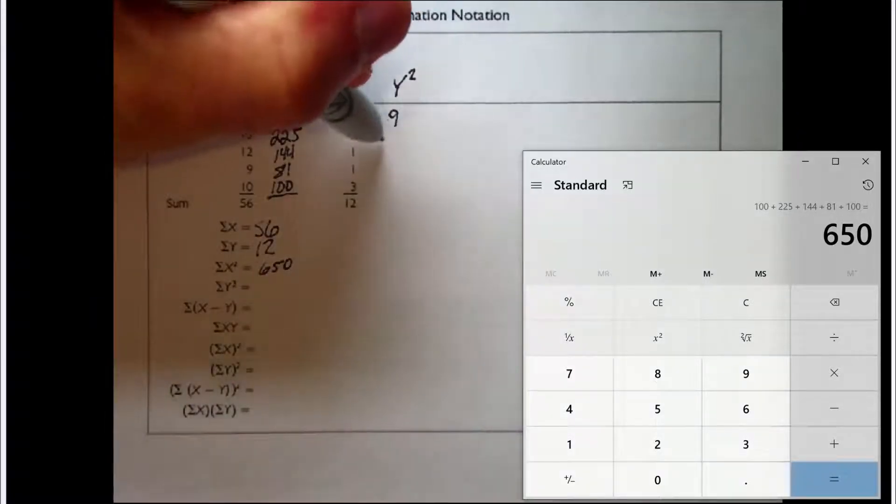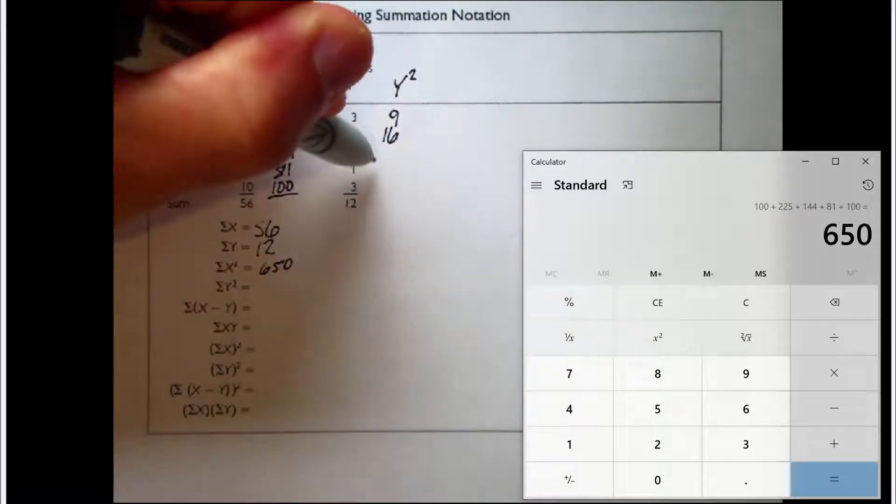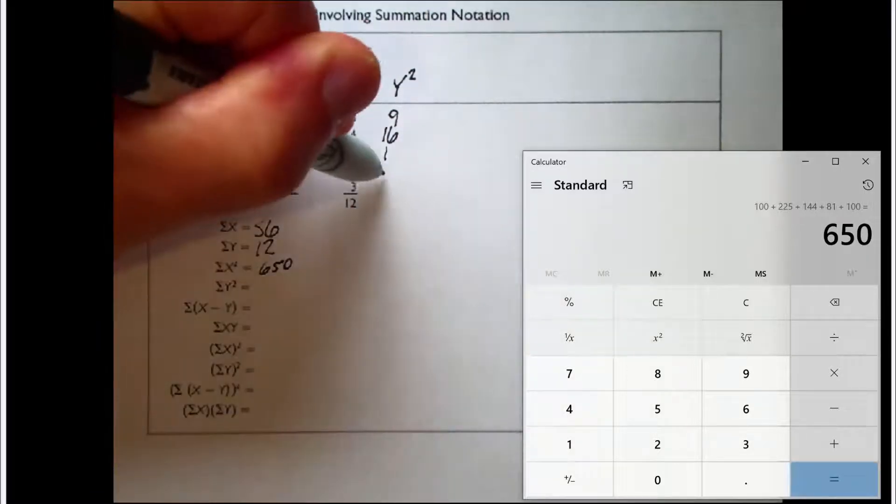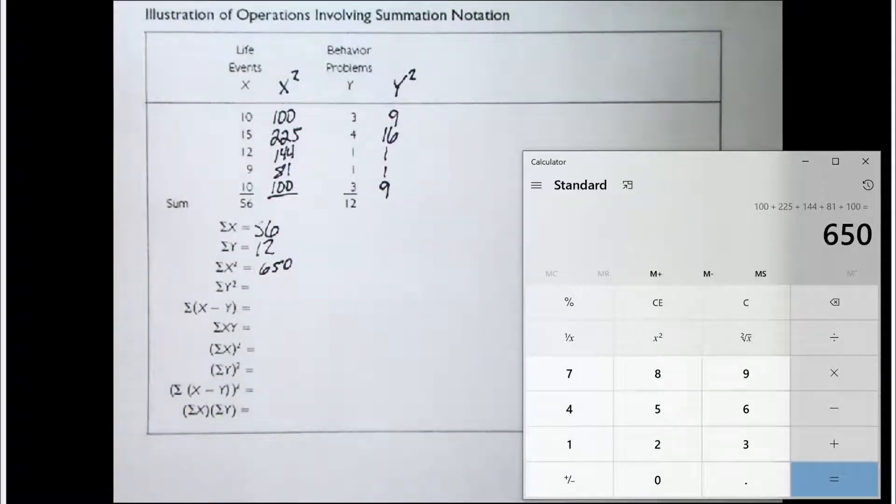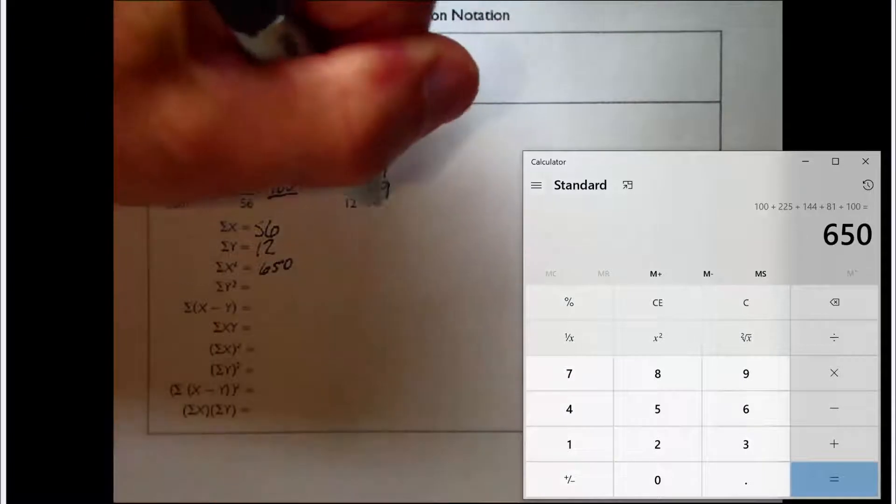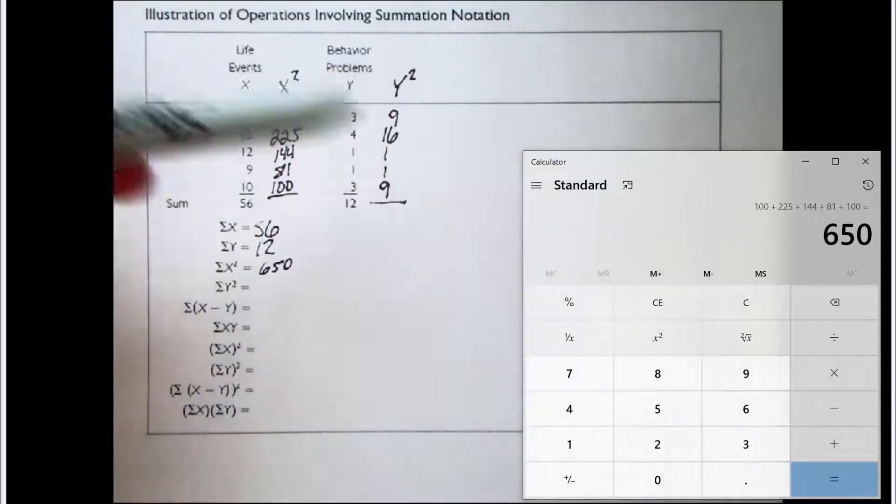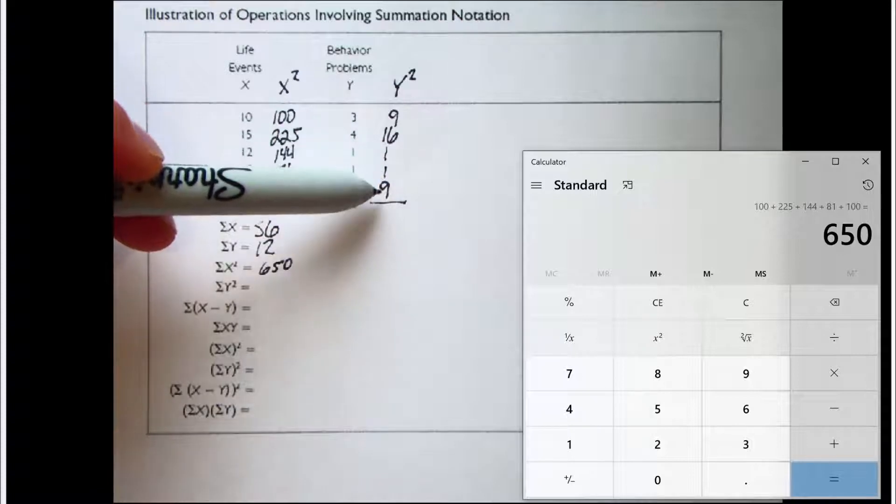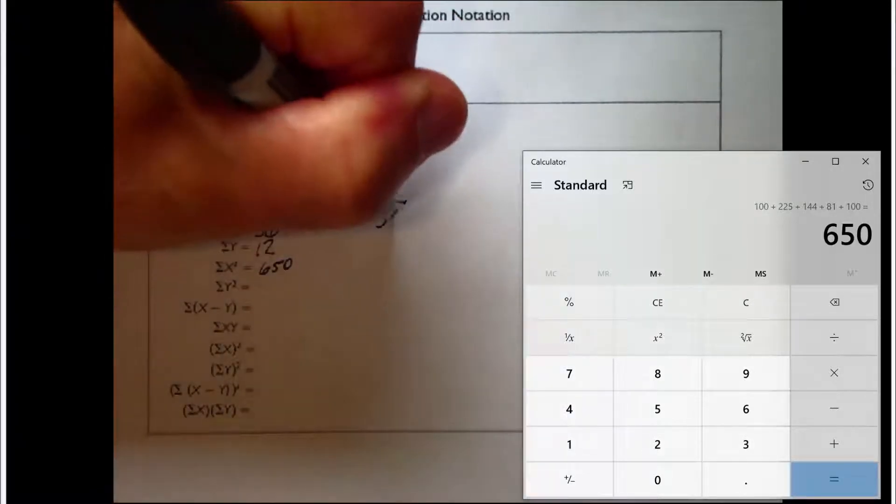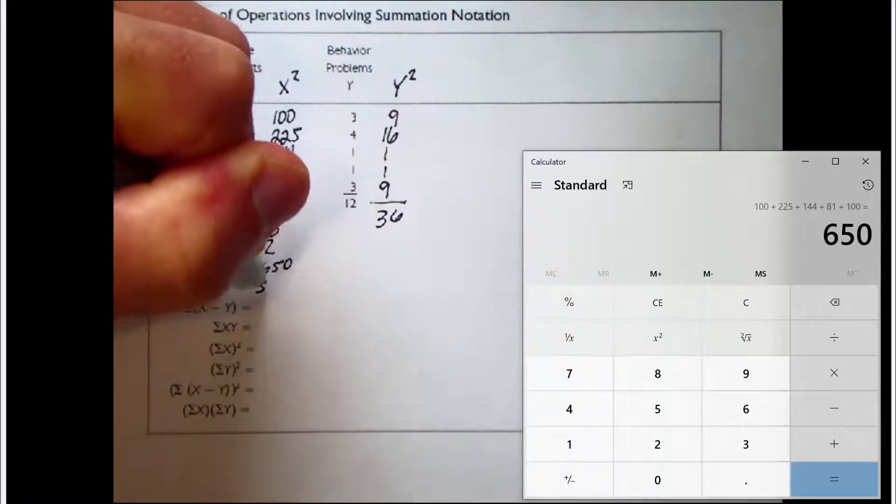3 squared is 9, 4 squared is 16, 1 squared is 1, 1 squared again is 1, and 3 squared is 9. All right, now we need to determine if we might be ready for step three. So we ask ourselves, do we have a column labeled with what we've been asked to sum up? And we do. So we should go ahead with step three, and we should sum up that column. 9 and 16 is 25, 26, 27, and 9 would be 36. So the sum of Y squared is 36.